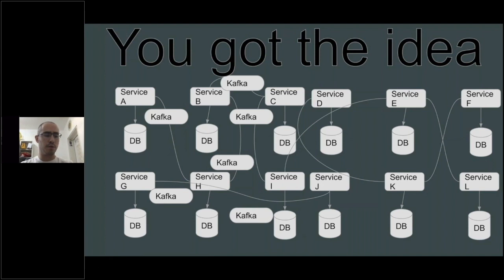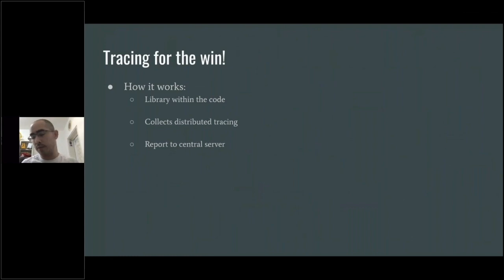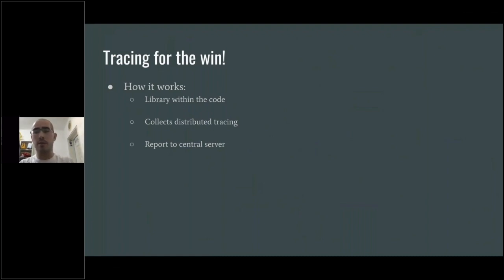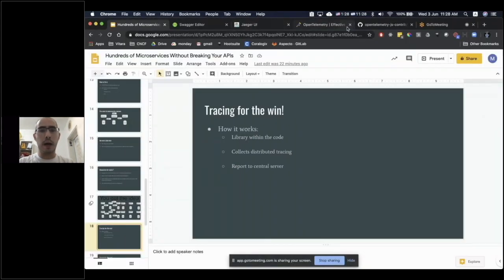This is one of the major things I want to show you that we can actually solve. The tool for that is distributed tracing — basically the ability to trace how microservices communicate with one another. If we have something that collects actual traffic running between services, analyzes it, and reports to a central server that lets me see the flows in my architecture, it would be amazing and make my life as a developer much easier. The tool I'll talk about is OpenTelemetry.